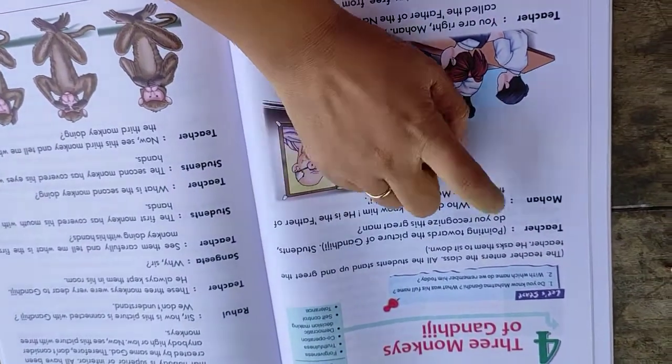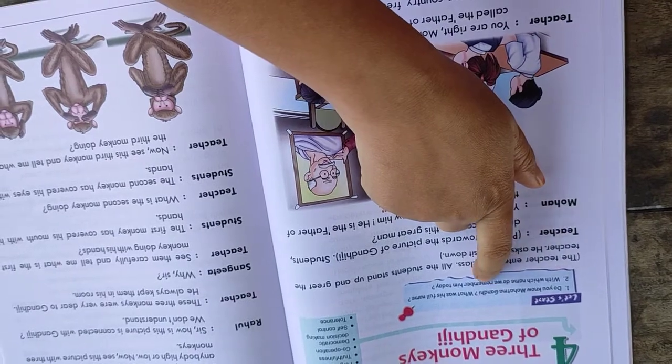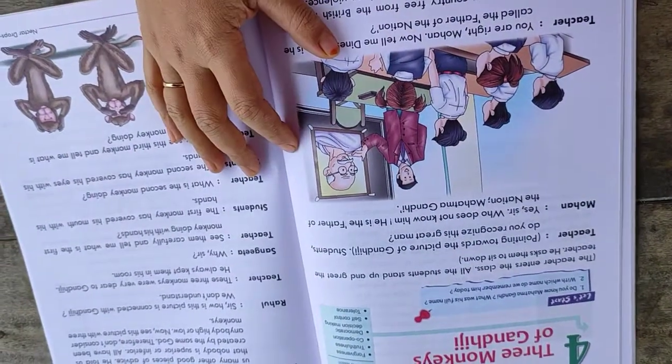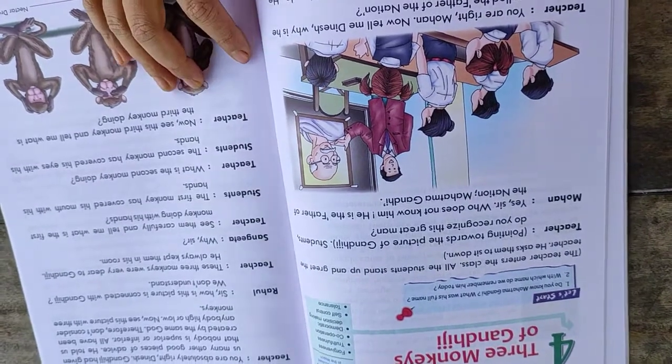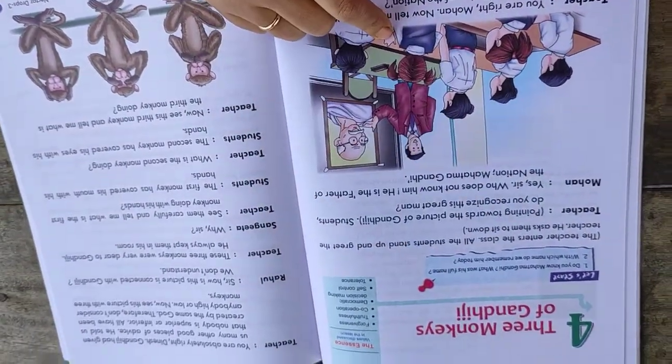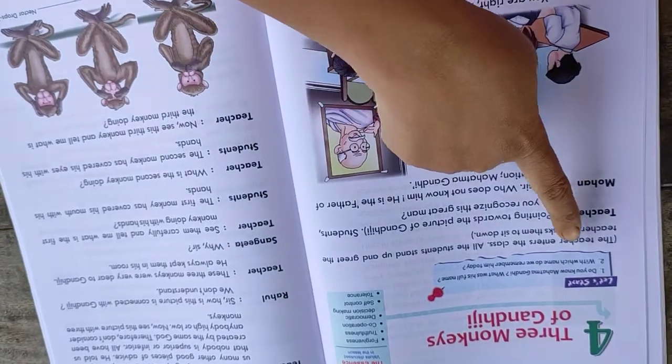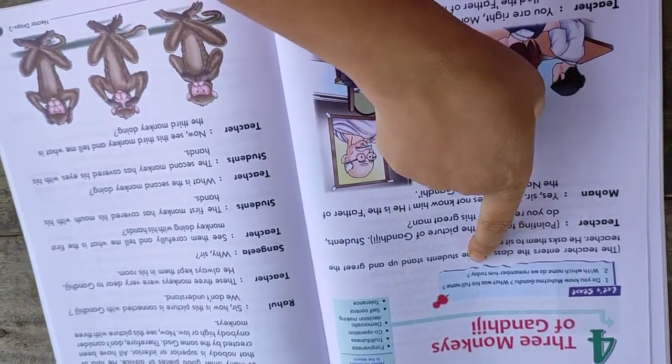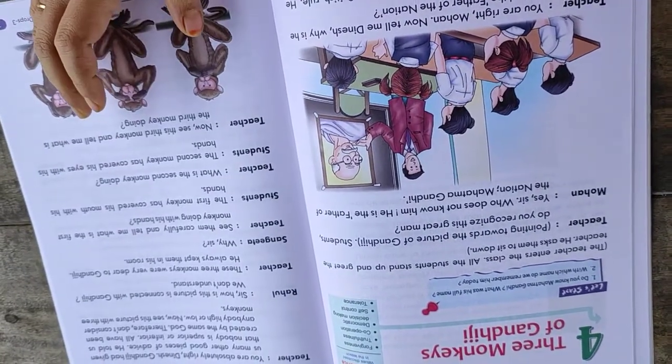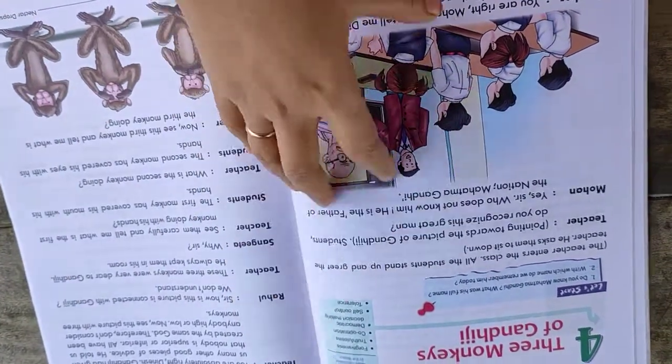But before we begin the class, let's see this. Do you know Mahatma Gandhi? What was his full name? I'm sure all of you know about Mahatma Gandhi. His full name was Mohandas Karamchand Gandhi. But which name do we remember him today? I think we know him by Mahatma Gandhi. He's actually commonly called Bapu.